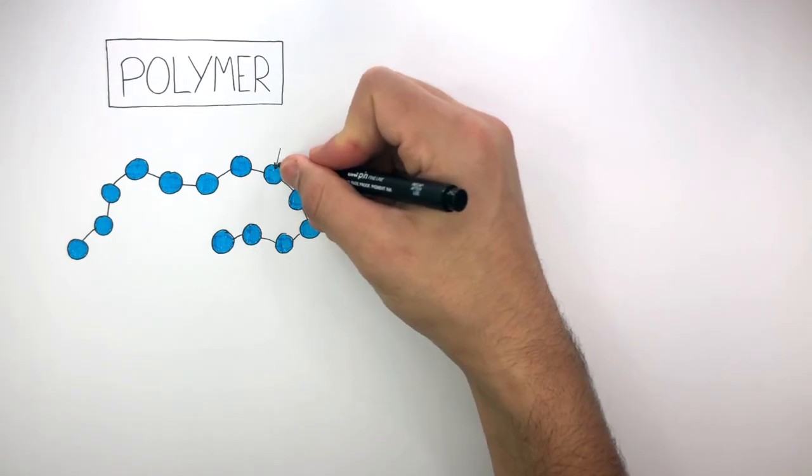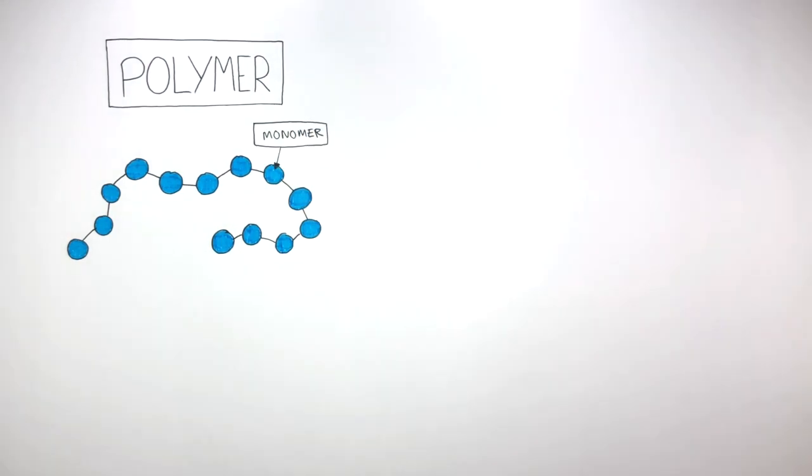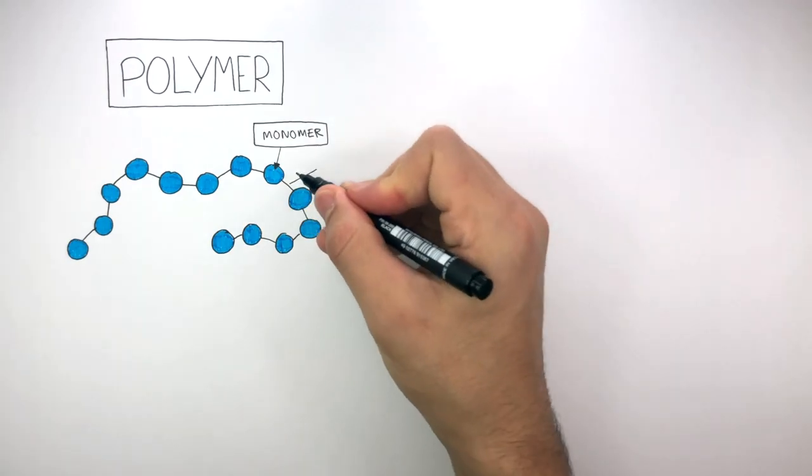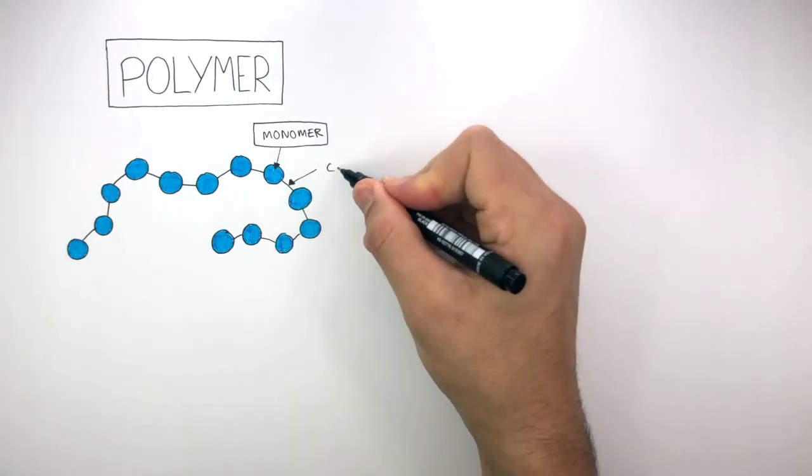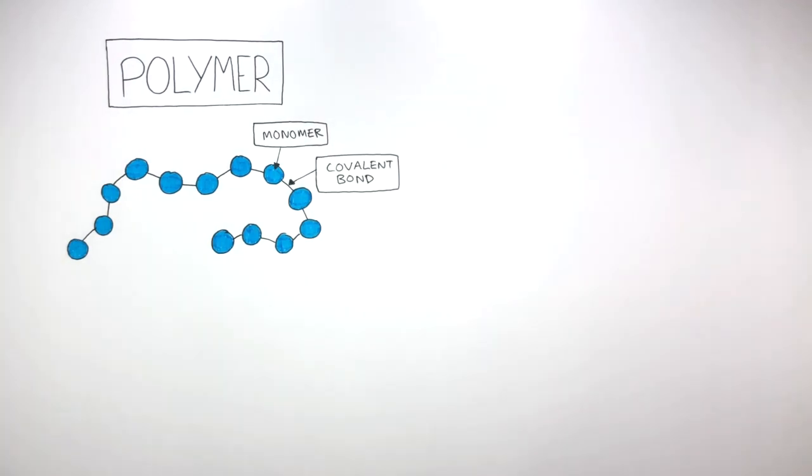These blue circles represent the monomers, and a monomer is just a small molecule. And these lines between the monomers represent the covalent bonds which hold the monomers together.